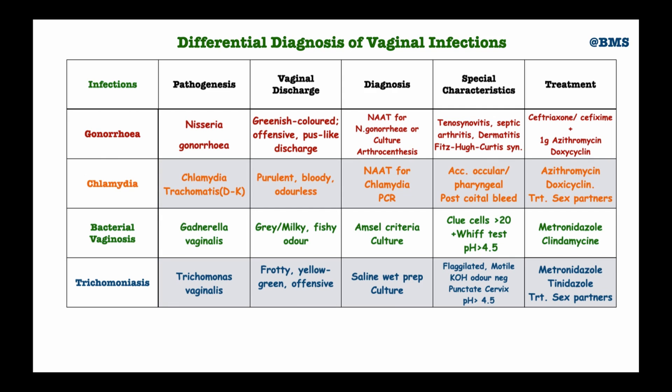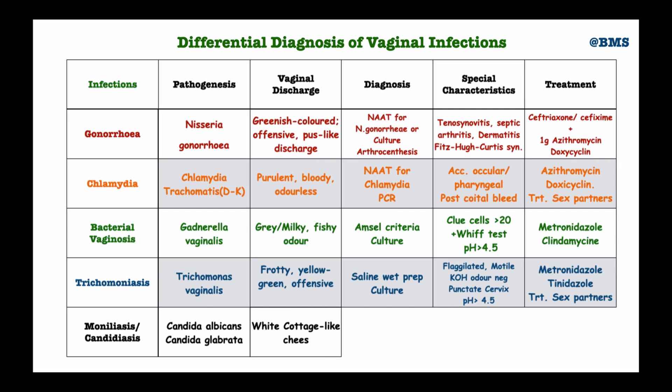The last infection to look at is moniliasis or candidiasis. The causative organism is Candida albicans, but in cases of recurrent candidiasis — approximately four times per year — we need to suspect a non-albicans cause, typically Candida glabrata. The vaginal discharge is usually white, cottage cheese-like. In an exam, white cottage-like cheese discharge should immediately suggest candidiasis. Diagnosis is based on clinical manifestation, and we can also do microscopy and culture to isolate Candida albicans.